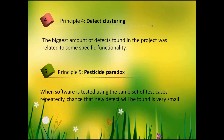The fifth principle: pesticide paradox. When software is tested using the same set of test cases repeatedly, the chance that new defects will be found is very small. To memorize this principle, think about pesticides — when a plant is processed with a particular pesticide, after some time it develops resistance to it, so farmers must use different types. Similarly, testers should select different test scenarios, change test cases, and revise regression test sets from time to time to make testing more effective.